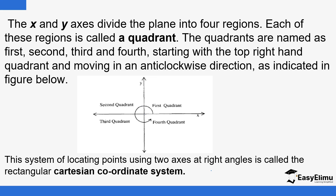The x and the y-axis divide the plane into four regions. Each of these regions is called a quadrant; if there are many, we call them quadrants. The quadrants are named first, second, third, and fourth, starting from the positive x-axis, moving in the anti-clockwise direction. This direction is called anti-clockwise — the opposite would be clockwise.